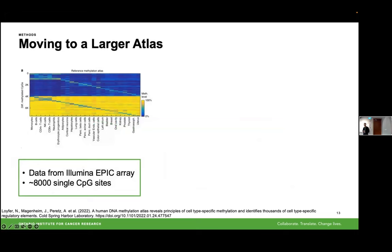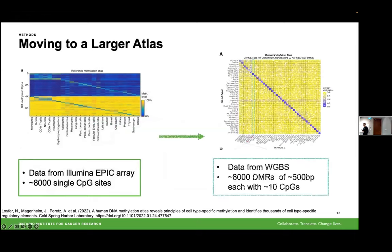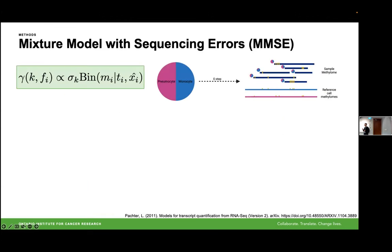While working on this project, the group we're collaborating with in Israel released a larger methylation atlas built on bisulfite sequencing data. Since bisulfite sequencing data is more similar to nanopore methylation data, we wanted to adjust our model to use it. Additionally, they include far more DMRs and CpGs in their methylation atlas. We're moving towards an atlas using large regions instead of single CpG sites, which provides much more distinguishing regions between cell types. However, the LLSP model can't differentiate between methylation calls in the same region on different reads, so we designed another model.